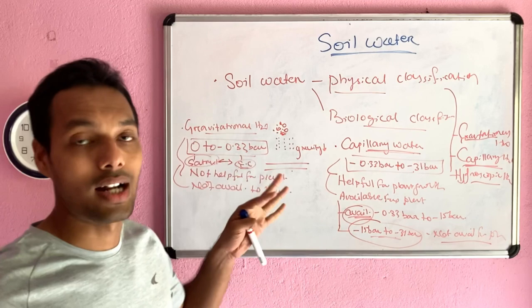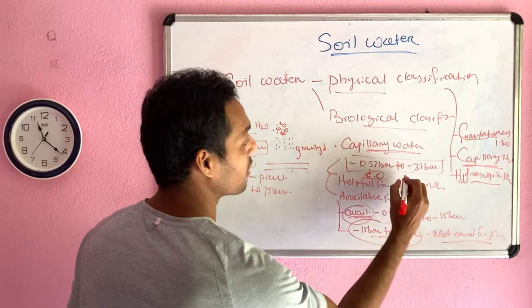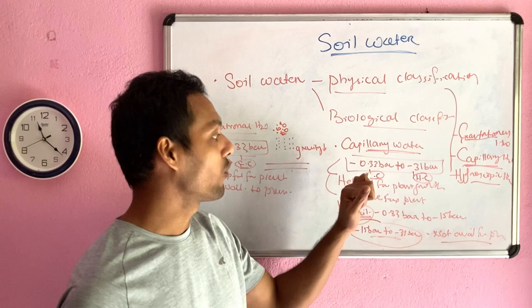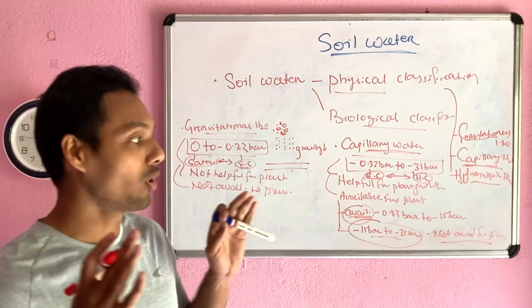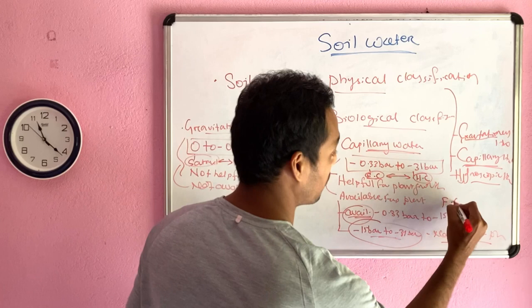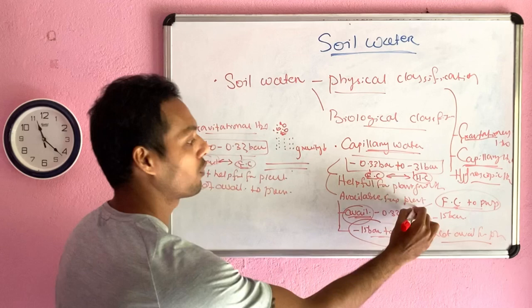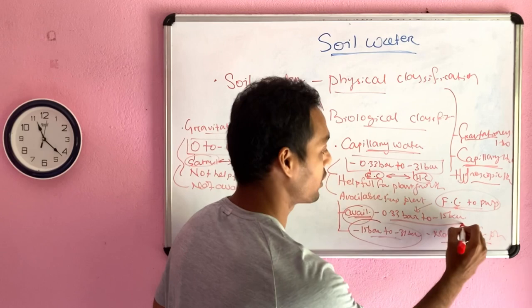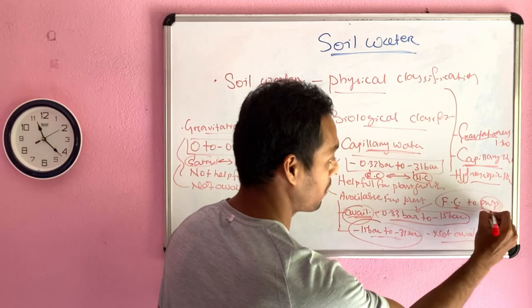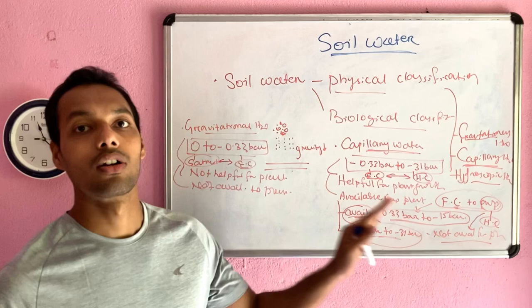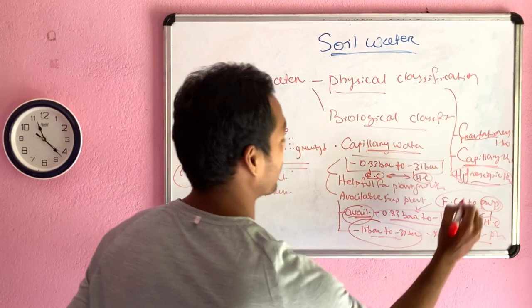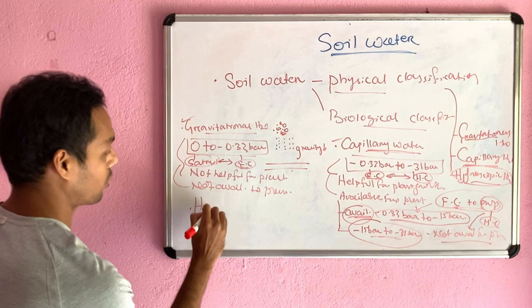So, gravitational water ranges from saturation to field capacity and is not available for plant. Capillary water from field capacity to permanent wilting point — that is minus 0.33 bar to minus 15 bar — is available for plant growth and uptake. The remaining capillary water from permanent wilting point to hygroscopic coefficient — minus 15 bar to minus 31 bar — is not available for plant uptake.